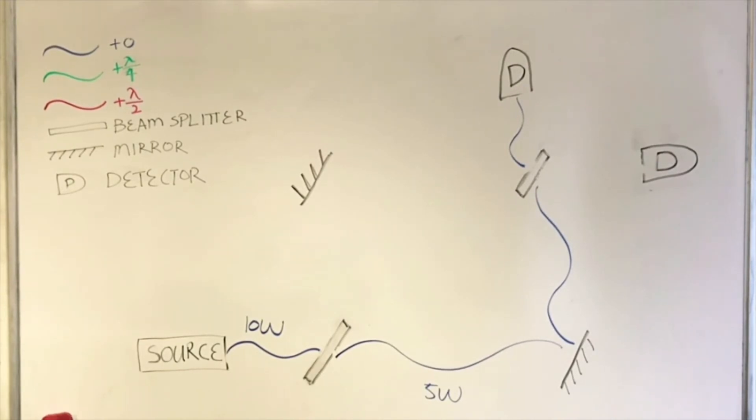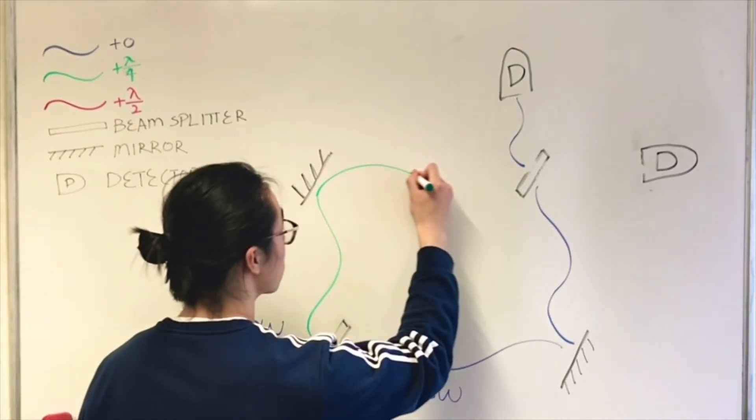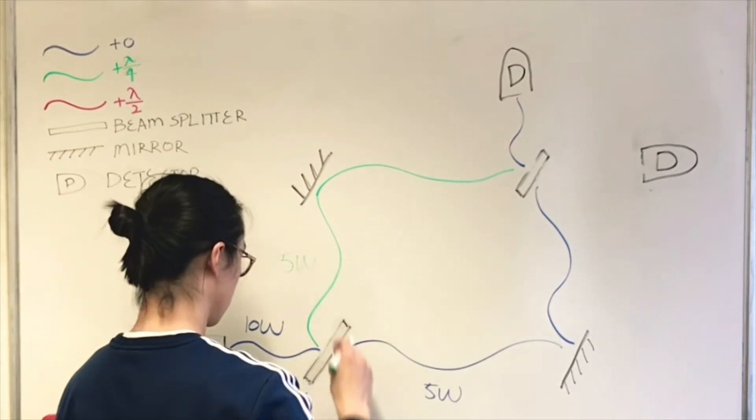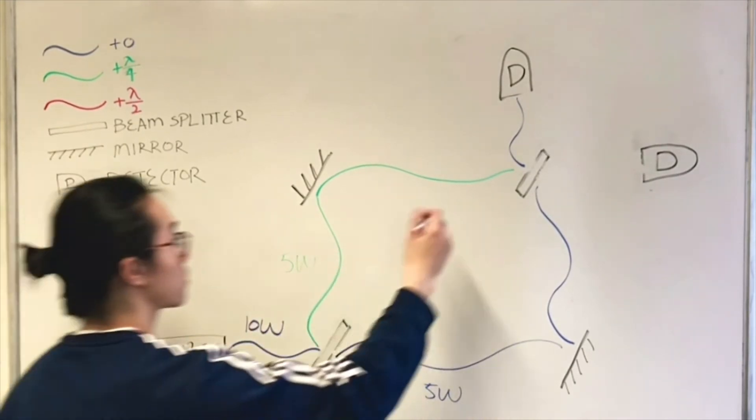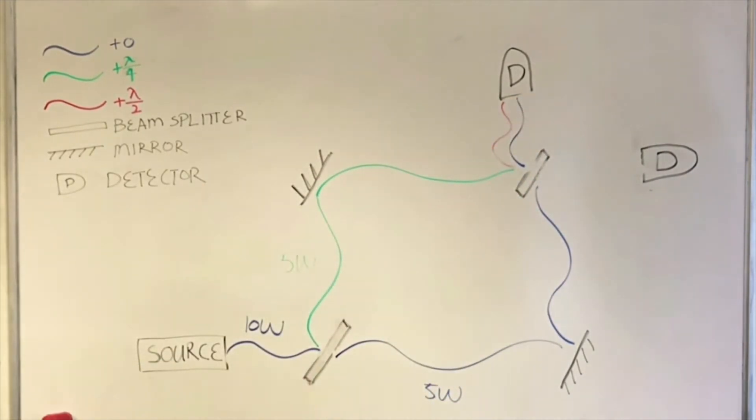Now we can look at the other wave, the wave that was reflected at the first bottom left beam splitter. It will have a quarter of a wavelength phase shift. It hits the mirror and arrives at the last beam splitter. It will then be reflected by the beam splitter again, introducing another phase shift of a quarter wavelength. The wave already has a phase shift of a quarter wavelength. When we add another quarter wavelength on top of that, it will have a phase shift of half wavelength.